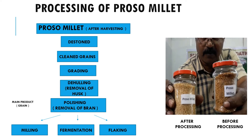Let's move further to ProSomulets processing. These are the main steps included. Firstly, we have the ProSomulets which we obtain after harvesting. Then these are de-stoned using a de-stoner, then cleaned using an aspirator, then graded according to their size and color. Then de-hulling, that is removal of the husk layer, is done using a de-huller. Then polishing, that is removal of bran.